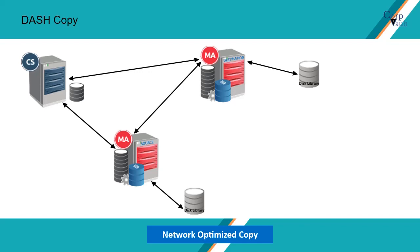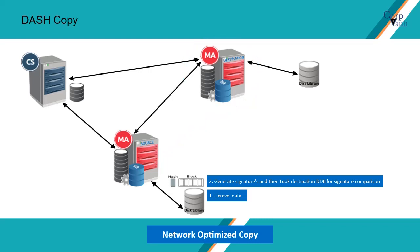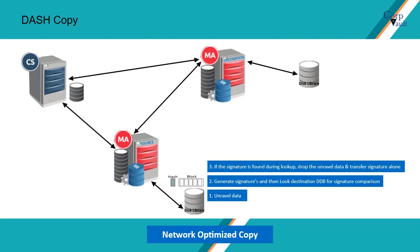During the Dash Copy operation, the data on the primary disk is unraveled. Unraveled data is compressed, divided into blocks, and then new signatures are generated on the primary media agent. These signatures are compared to the existing signatures on the DDB located on the destination remote media agent. Based on the comparison, if the signature is present on the destination DDB, then the data blocks are already available on the destination media agent, and only signature references are transmitted to update the destination DDB.